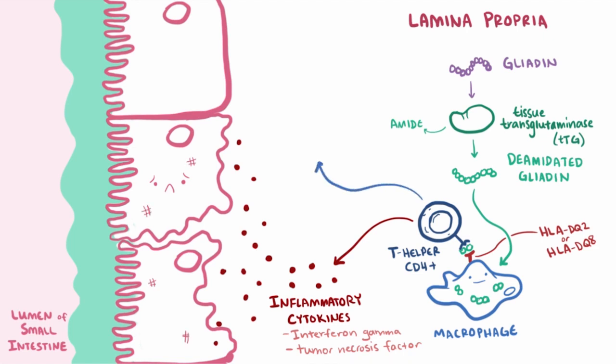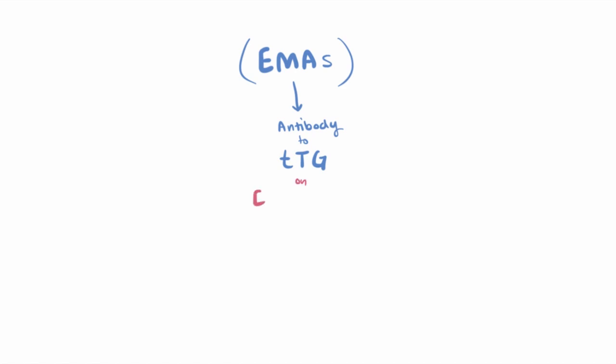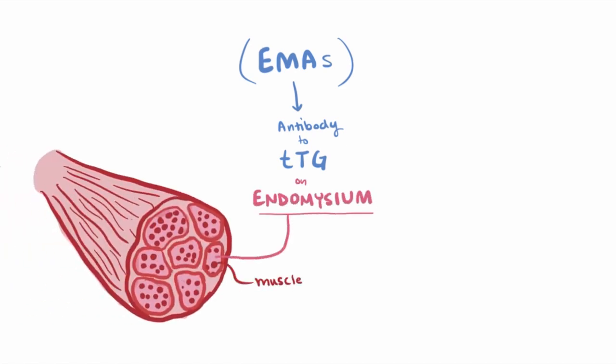Not only that though, the helper T cell stimulates B cells to start pumping out IgA antibodies against the gliadin, the transglutaminase enzyme, and endomysial antibodies, or EMAs, which are actually another type of antibody for transglutaminase, but for transglutaminase found in the endomysium, which is this layer of connective tissue around muscle fibers.